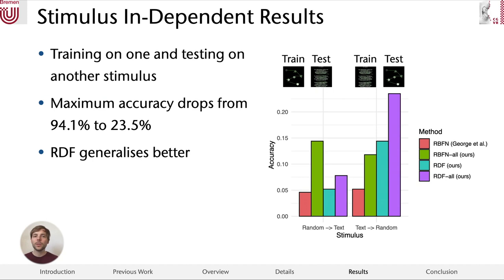We further found that the performance is highly asymmetrical. That is, when we train on random dot and evaluate on the poem, the performance is much worse than the other way around, where we train on poem and evaluate on text. Further, we find that the random decision forest this time generalizes better than the radial basis function network.